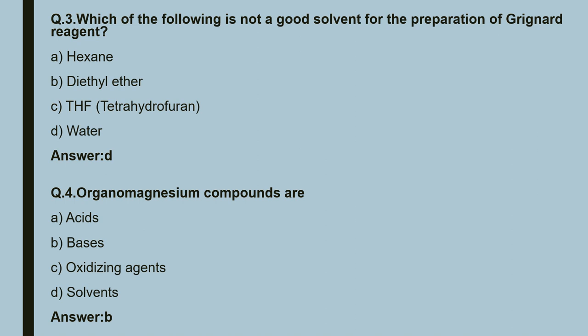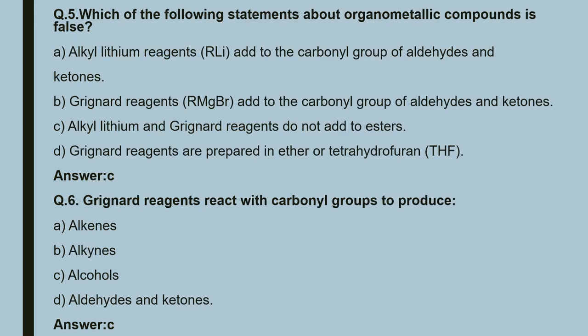Fourth question: organomagnesium compounds are — A. acids, B. bases, C. oxidizing agents, D. solvents. The correct answer is B. Organomagnesium compounds are bases.